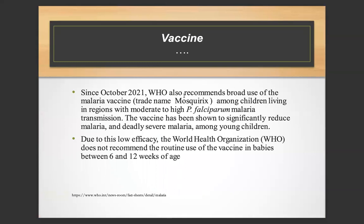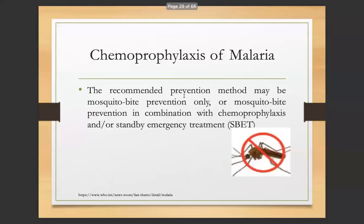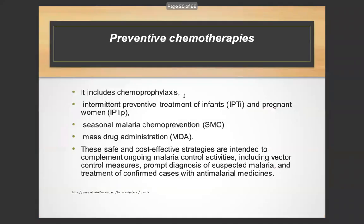Vaccine: Since October 2021, WHO recommends broad use of a malaria vaccine among young children to prevent deadly severe malaria. Due to low efficacy, WHO does not recommend routine use of the vaccine in babies between 6 and 12 weeks of age. Chemoprophylaxis of malaria: recommended prevention may be mosquito bite prevention only, or in combination with chemoprophylaxis and/or standby emergency treatment. Preventive chemotherapies include chemoprophylaxis, intermittent preventive treatment of infants and pregnant women, seasonal malaria chemoprevention, and mass drug administration — complementing vector control measures, diagnosis, and treatment with anti-malarial medicines.